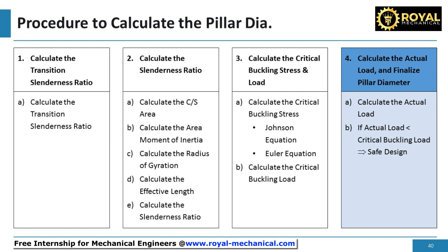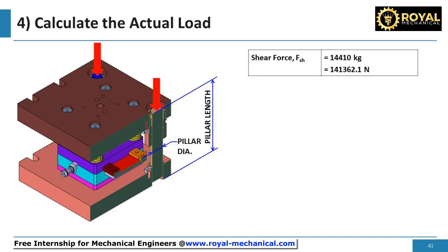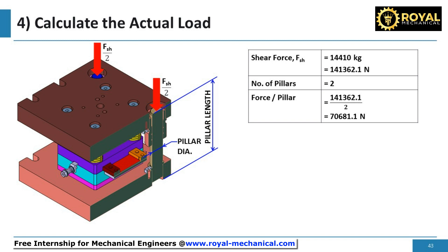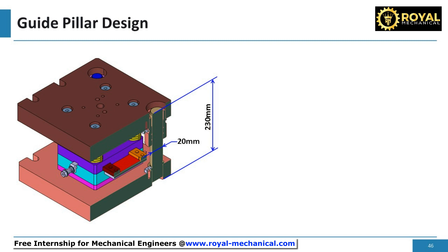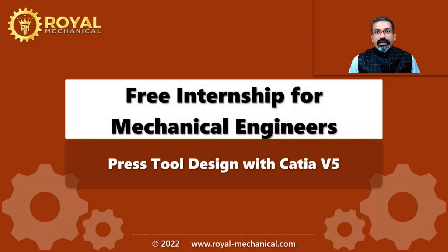Next, let's calculate the actual load and finalize the pillar diameter. The total load on the guide pillars is the shear force, equal to 14,410 kilograms, which is 141,362.1 newtons. Using two pillars for this press tool, the force on each pillar is 70,681.1 newtons. The critical buckling load FCR is 125,604.1 newtons, which is more than the actual force per pillar — hence the design is safe. So the pillar length is 230 millimeters and the pillar diameter is 20 millimeters. With this, we have successfully calculated the pillar length and diameter. That's all in this e-learning module. Thanks.